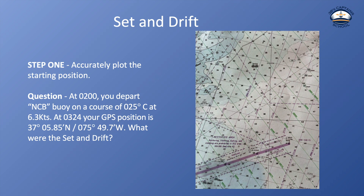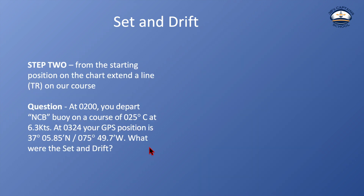We're going to figure out what the current was doing to push us off our course. We're starting at the NCB buoy, and we can find the NCB buoy right here on the chart, circled. Step two: from the starting position on the chart, extend a track line on our course. We departed NCB buoy on a course of 025 compass. We cannot put a compass course on a chart — we can only put true courses on a chart. So the first thing we need to do is convert this to a true course.